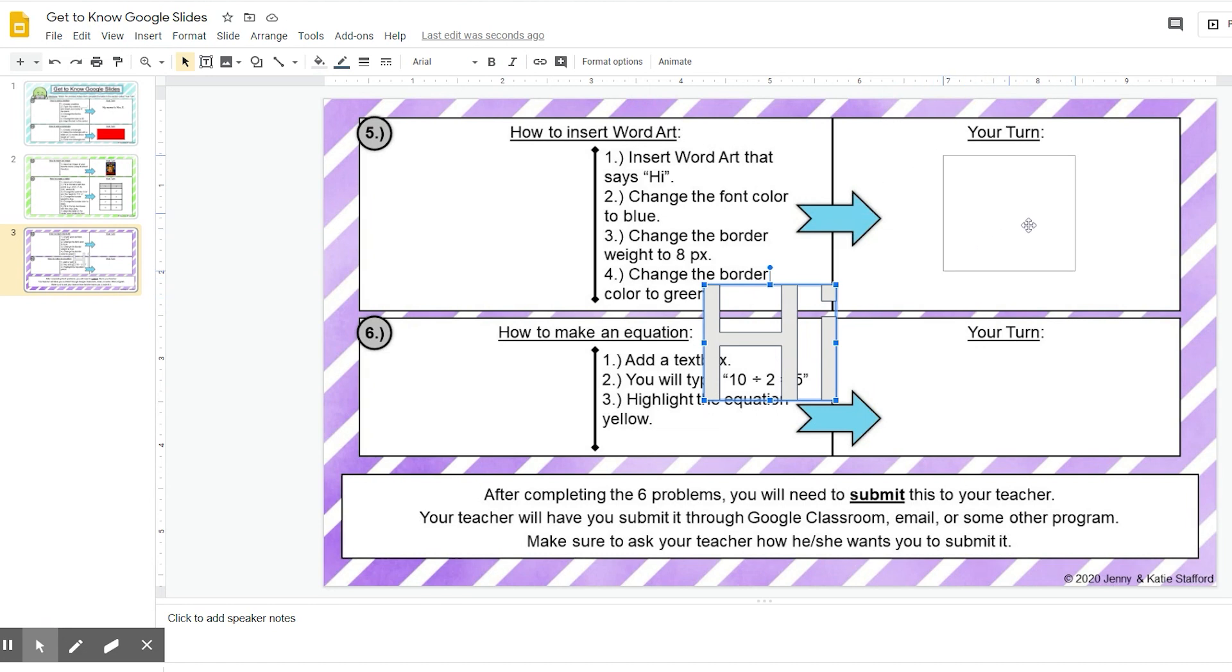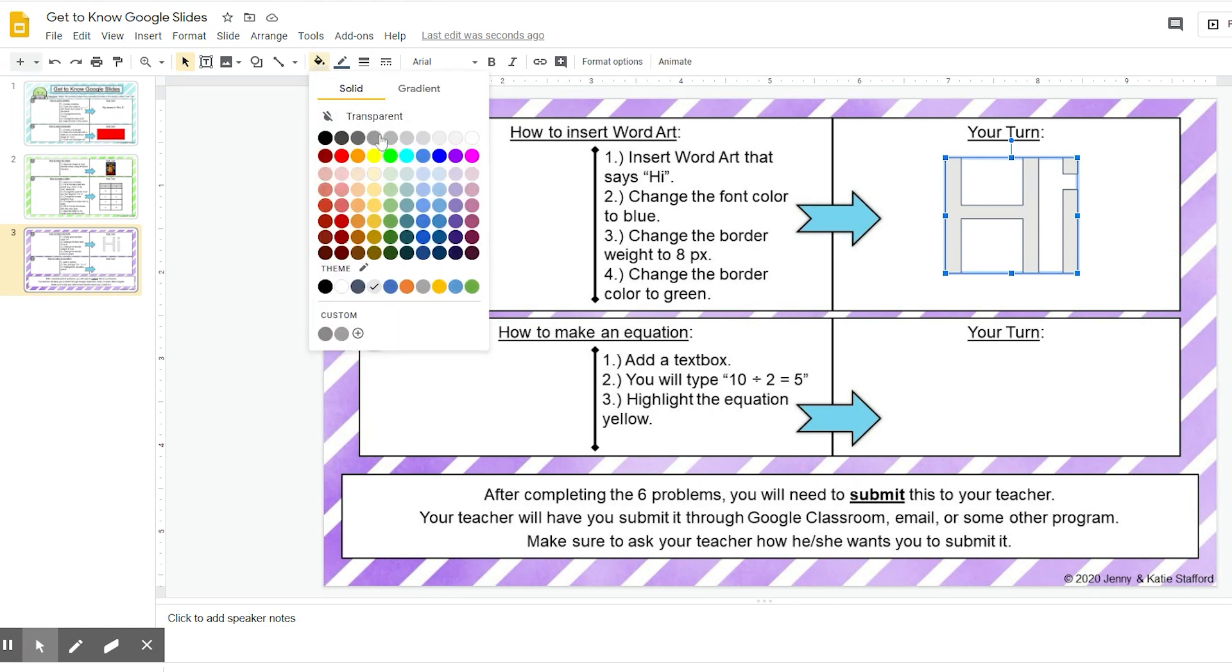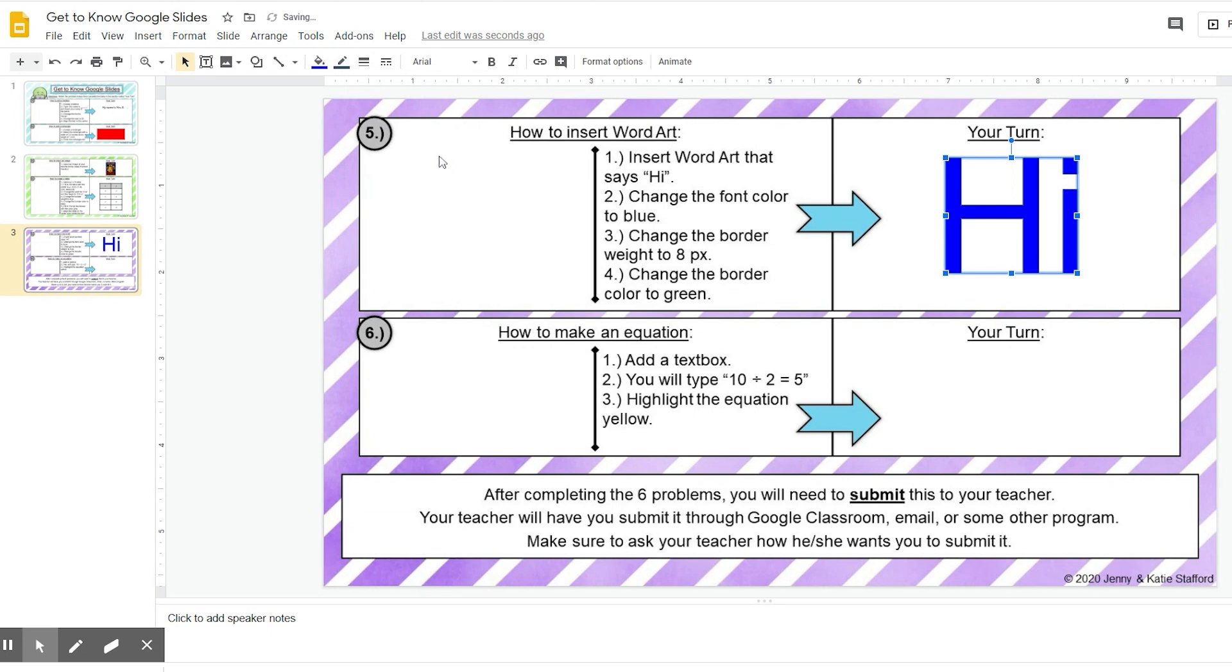I'm going to drag it over here to your turn. Step two says change the font color to blue. While it's highlighted, I'm going to change the font color to blue. I'll click fill color and go to blue and click that.